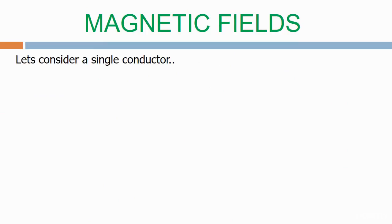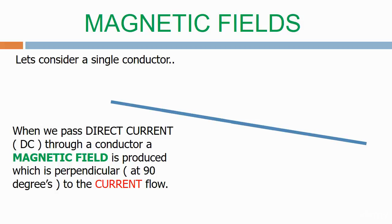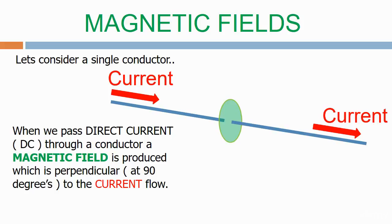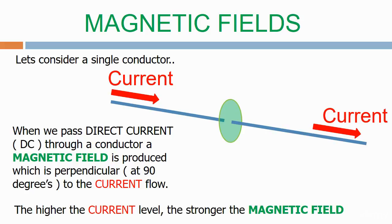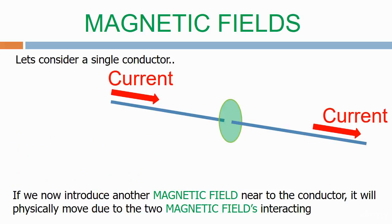Let's consider a single conductor. Here we have a conductor or wire. When we pass direct current or DC through a conductor, a magnetic field is produced which is perpendicular, i.e. 90 degrees, to the current flow. The higher the current level the stronger the magnetic field. If we now introduce another magnetic field near to the conductor, it will physically move due to the two magnetic fields interacting.